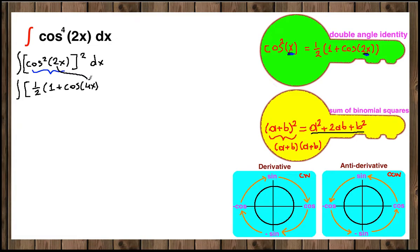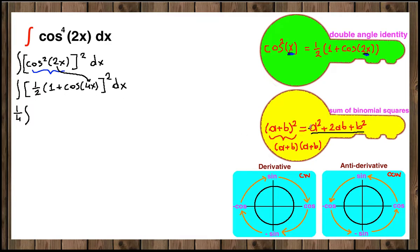We are going to double this angle, and we have a squared sign here. Now we're going to square each term one by one. One half squared is one fourth, and we can pull it in front of the integral sign. Then we have 1 plus cosine of 4x, all squared. You can either FOIL it — 1 plus cosine of 4x times 1 plus cosine of 4x — or apply the binomial square formula: a squared plus 2ab plus b squared.